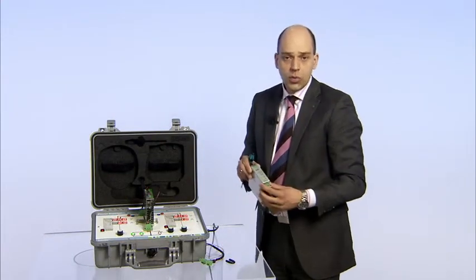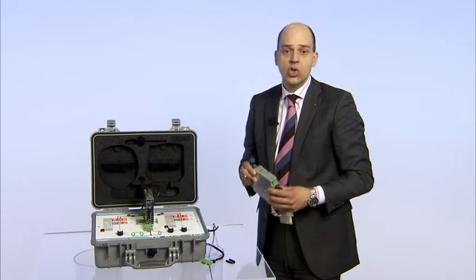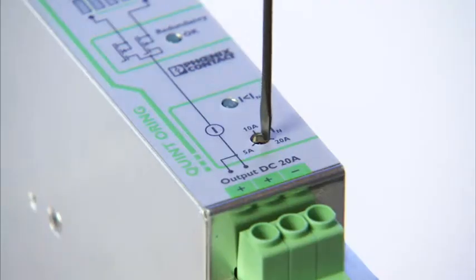We now connect the O-ring module and set the rotary selector switch to the nominal current of the power supply unit, i.e. 5 amps.